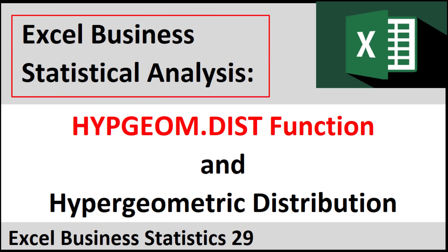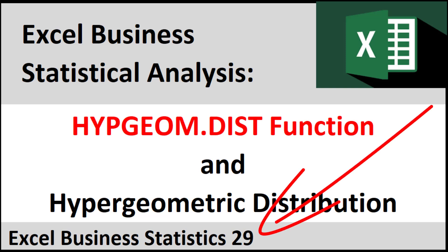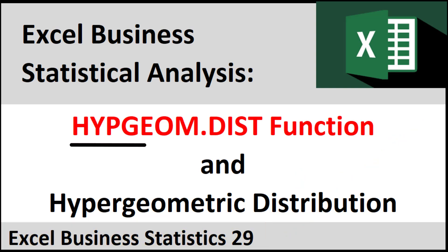Welcome to Excel Business Statistical Analysis video number 29. In this video, we get to look at the amazing hypergeometric distribution function for experiments where the probability of success does not remain the same each time, but instead changes as a conditional probability.